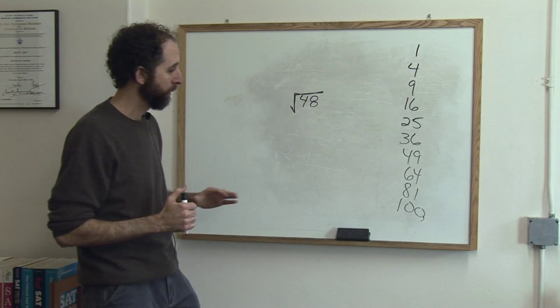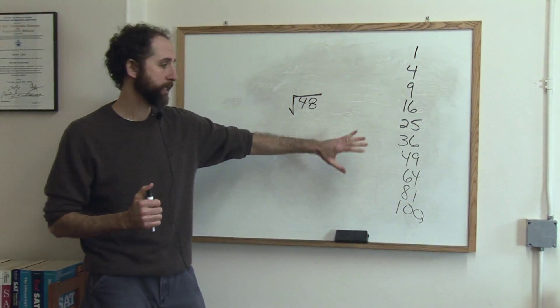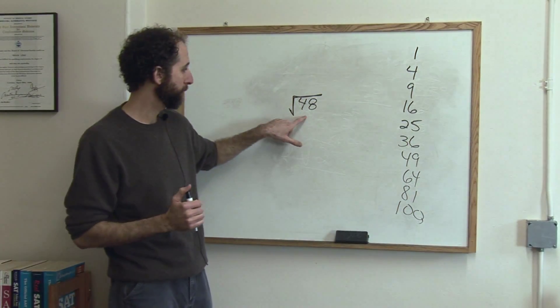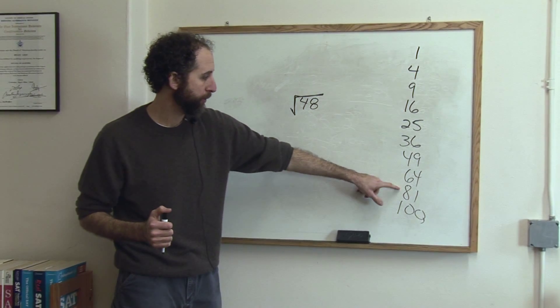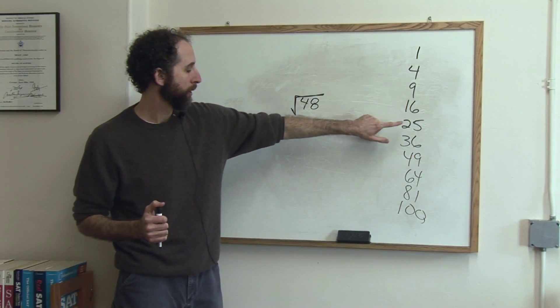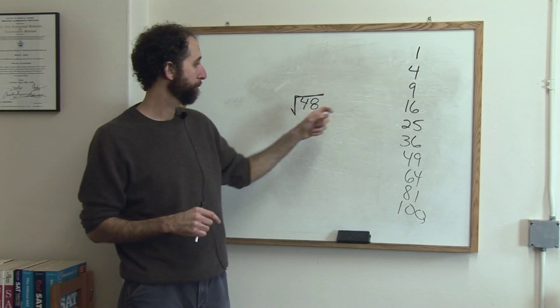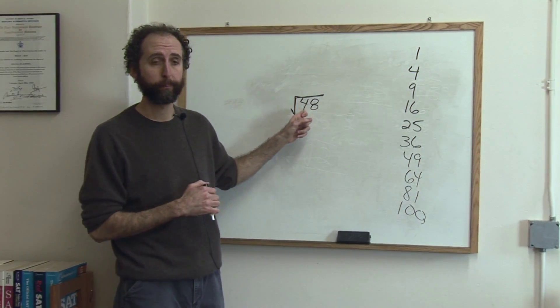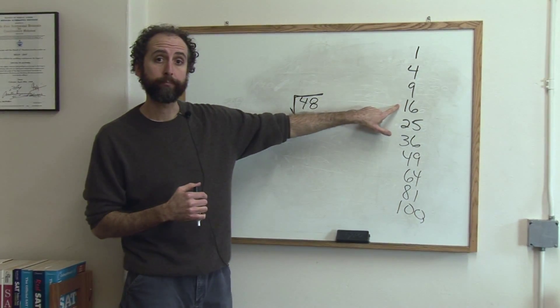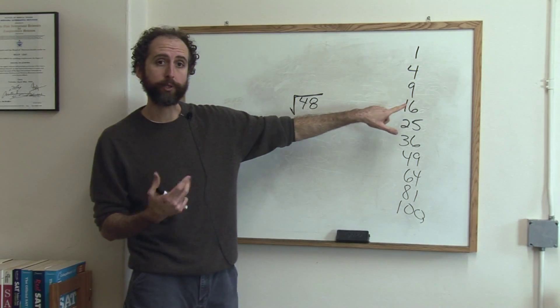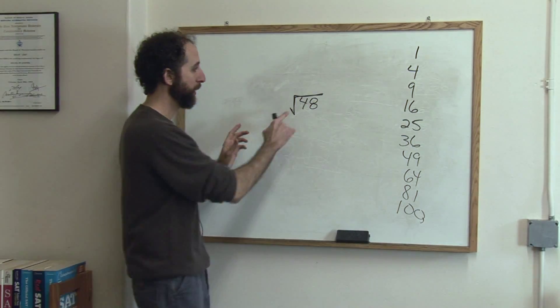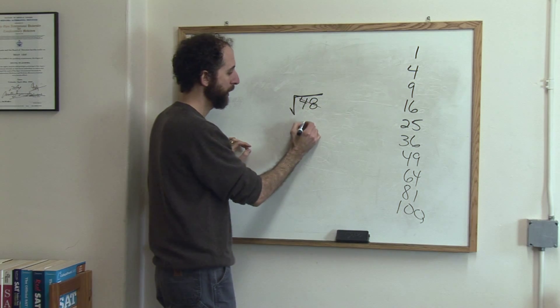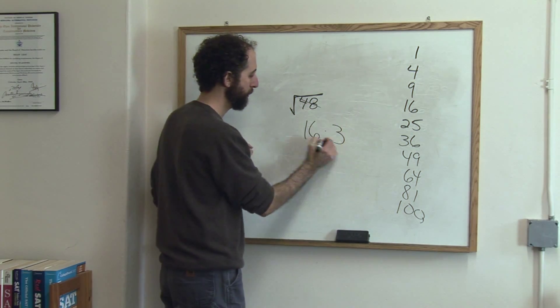Let's take a look at a second example. So we're going to look at our list of numbers and say what's the highest perfect square that goes into 48. It's 16. 48 divided by 16 works. It goes in evenly. 48 divided by 16 is 3. So we rewrite 48 as 16 times 3.